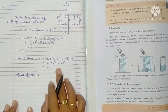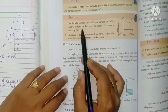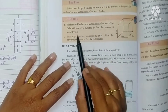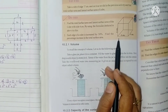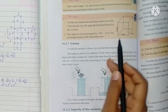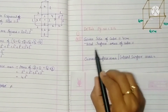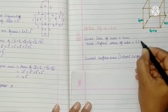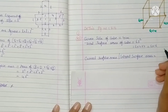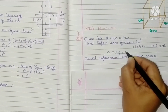They are not asking for volume, so this is the solution for the 'Try This'. Next, 'Do This': find the total surface area and lateral surface area of a cube with side 4 centimeters, using the formula from the above activity. Total surface area formula is 6L². So 6 × 4 × 4 = 6 × 16 = 96. Therefore, total surface area = 96 cm².